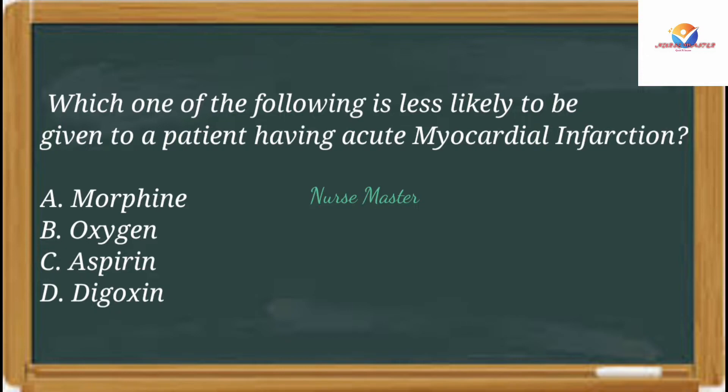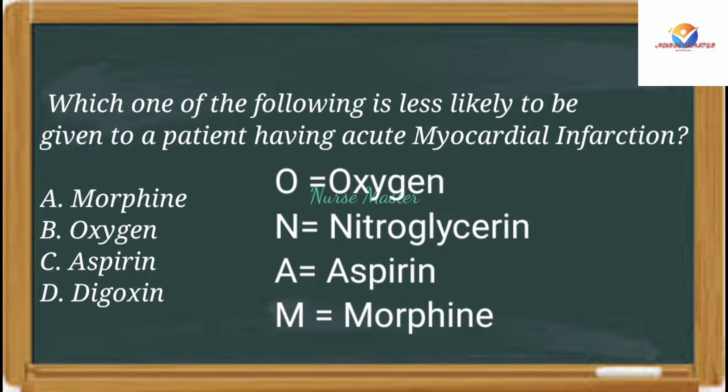Initial management of acute myocardial infarction — remember the mnemonic MONA. Oxygen is administered to increase oxygen of the blood. Nitroglycerin is administered sublingually to relieve chest pain. Nitroglycerin causes relaxation of vascular smooth muscles causing arterial and venous dilation.